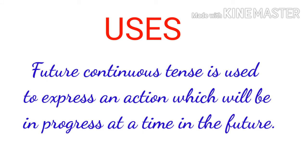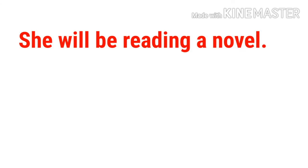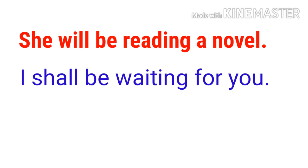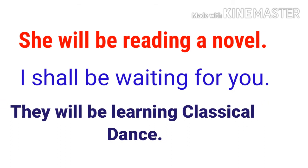The Future Continuous Tense is used to express an action which will be in progress at a time in the future. Examples: 'She will be reading a novel.' 'I shall be waiting for you.' 'They will be learning classical dance.'